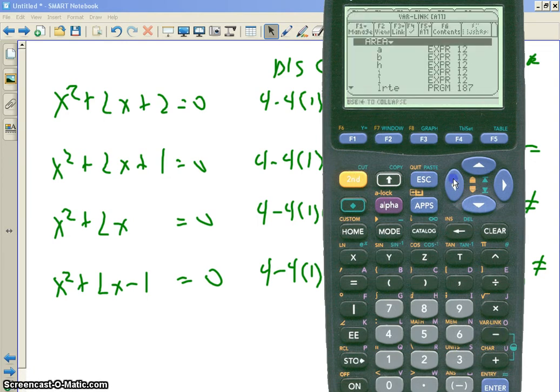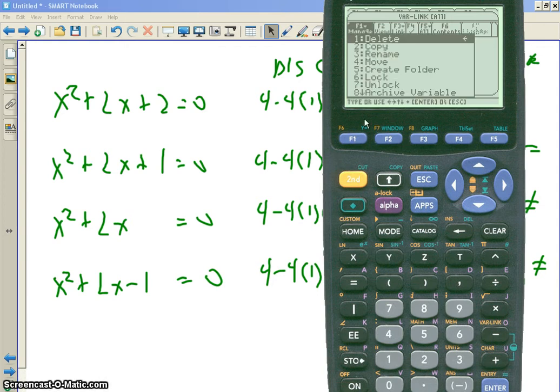In here, you'll note I already have a number of folders. I already have one for quad. So you can call it quad if you want, but I'm going to call it quad 2 to start from scratch. So hit F1 to manage your folders and go and create a folder.